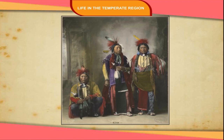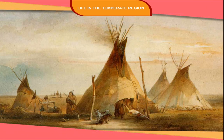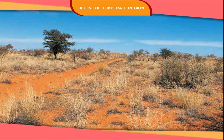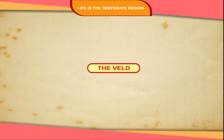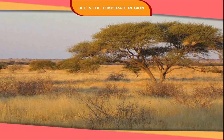Prairies were earlier inhabited by American Indians known as Red Indians. They were organized into tribes such as the Pawnee, the Crow, the Cree and the Apache. These tribes depended on hunting, primitive farming and herding of animals. In modern times, the population of the prairies is concentrated in large cities.